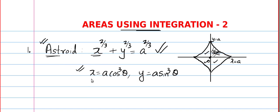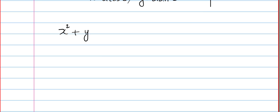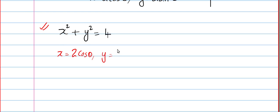For students who do not know the meaning of parametric form, I will give you a basic concept from circles. This is the equation of a circle which you learned in class 11. The parametric form of this circle is x = 2cosθ and y = 2sinθ.